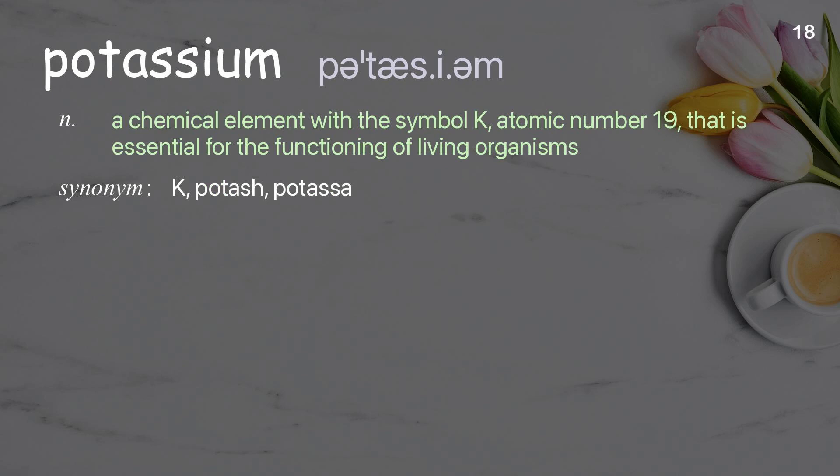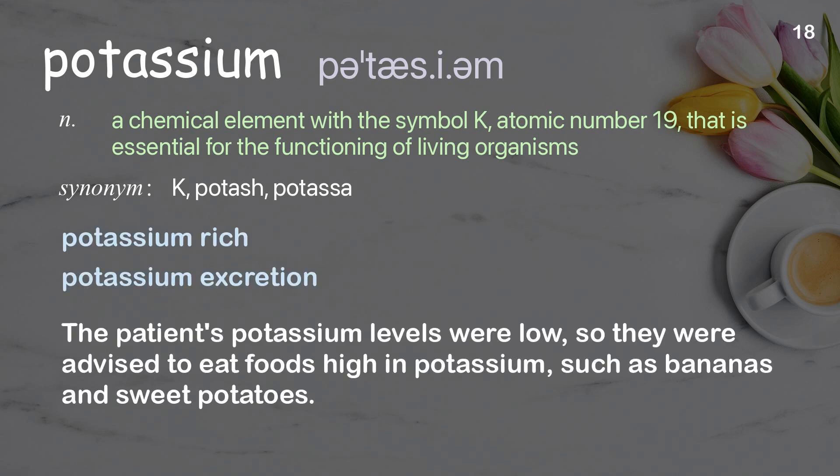Potassium. A chemical element with the symbol K, atomic number 19, that is essential for the functioning of living organisms. Examples: Potassium rich. Potassium excretion. The patient's potassium levels were low, so they were advised to eat foods high in potassium, such as bananas and sweet potatoes.